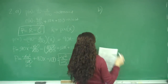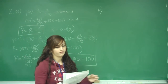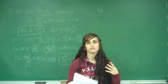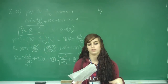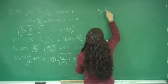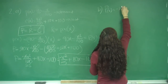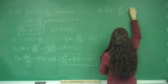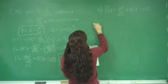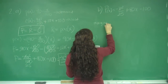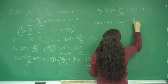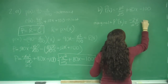For part B, they say find the marginal profit when 750 items are sold and interpret your results. The marginal profit — or marginal cost or marginal revenue — will be the derivative. When you see the word marginal, think derivative. Our profit function P(x) = -x²/25 + 80x - 100. So marginal profit equals P'(x), using the power rule: -2x/25 + 80.